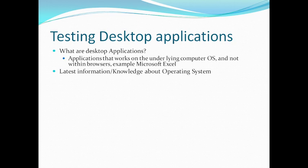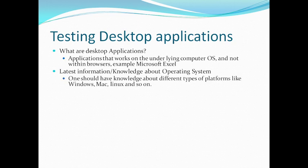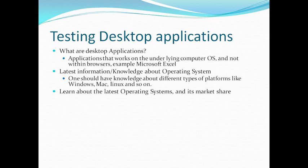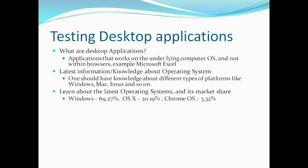You should have knowledge about various operating systems like Windows, Mac, Linux, and so on. Learn about the latest operating systems and their market share. Windows has a market share of 69.27%, macOS has 20%, and Chrome OS has 3.32%. Usually applications are made for only a single platform, and in very rare cases they are made for multiple platforms as far as desktop applications are concerned.